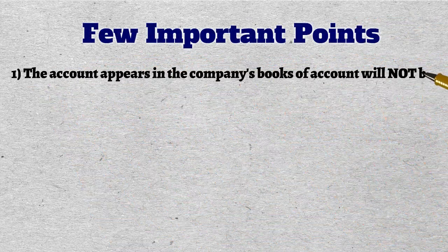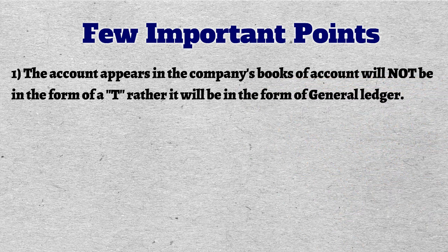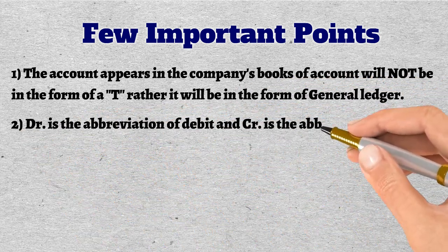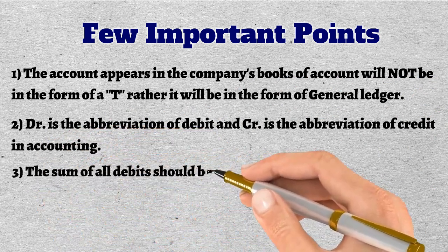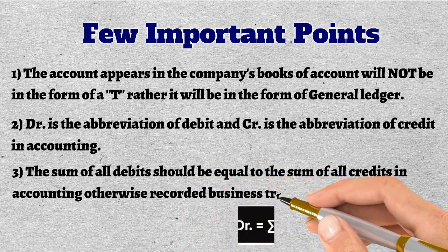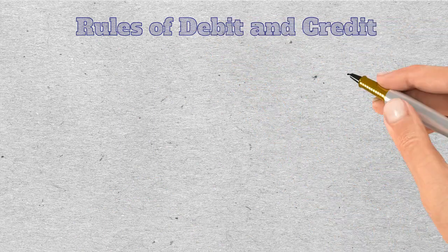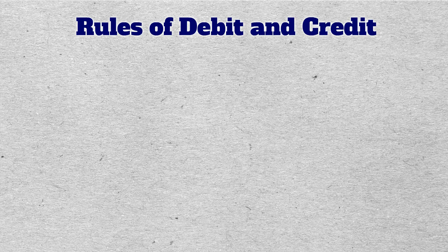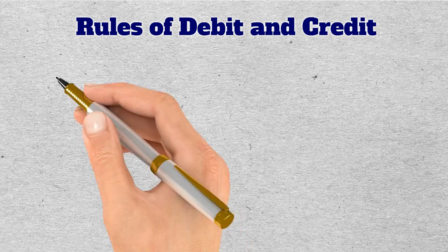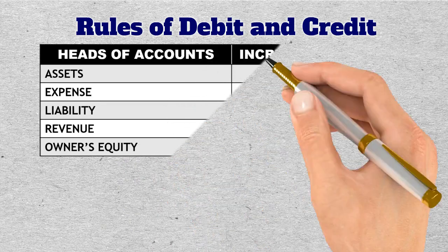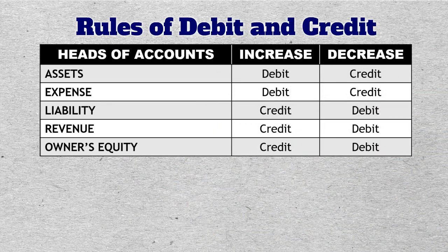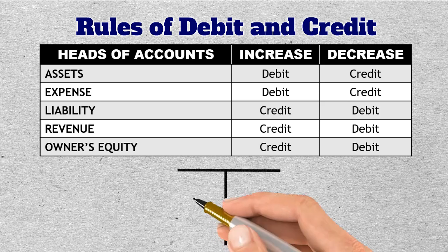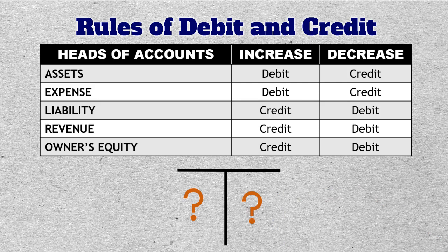Before discussing the rules of debit and credit, note a few important points. First, accounts in the company's books will appear in the form of a general ledger, not a T account. Second, DR is the abbreviation of debit and CR is the abbreviation of credit. Third, the sum of all debits should equal the sum of all credits; otherwise the recorded transaction will be treated as incorrect or incomplete. Now let's discuss the treatment or rules of debit and credit — this is the most challenging part: determining which account gets the debit entry and which gets the credit entry.